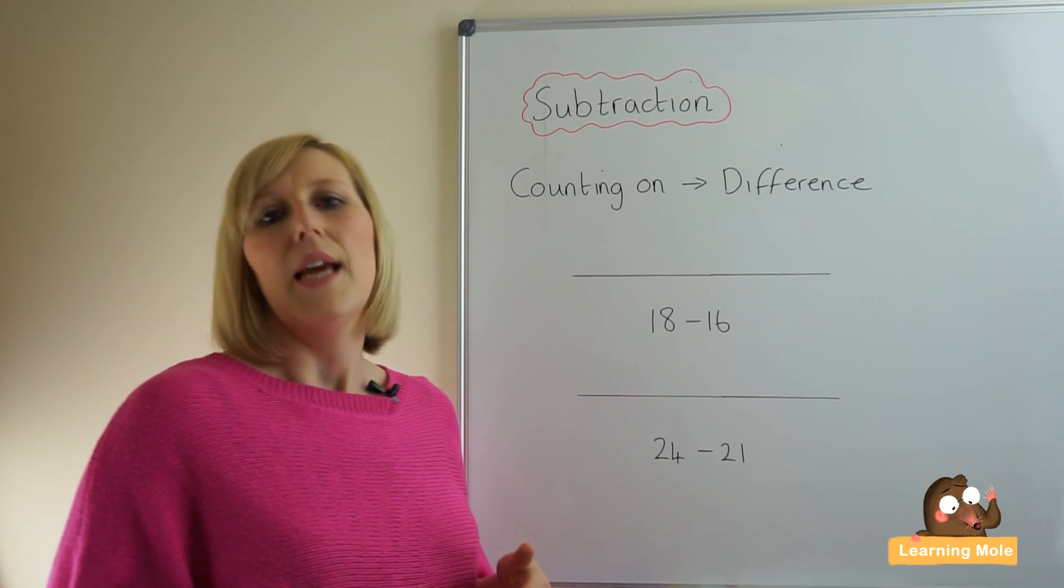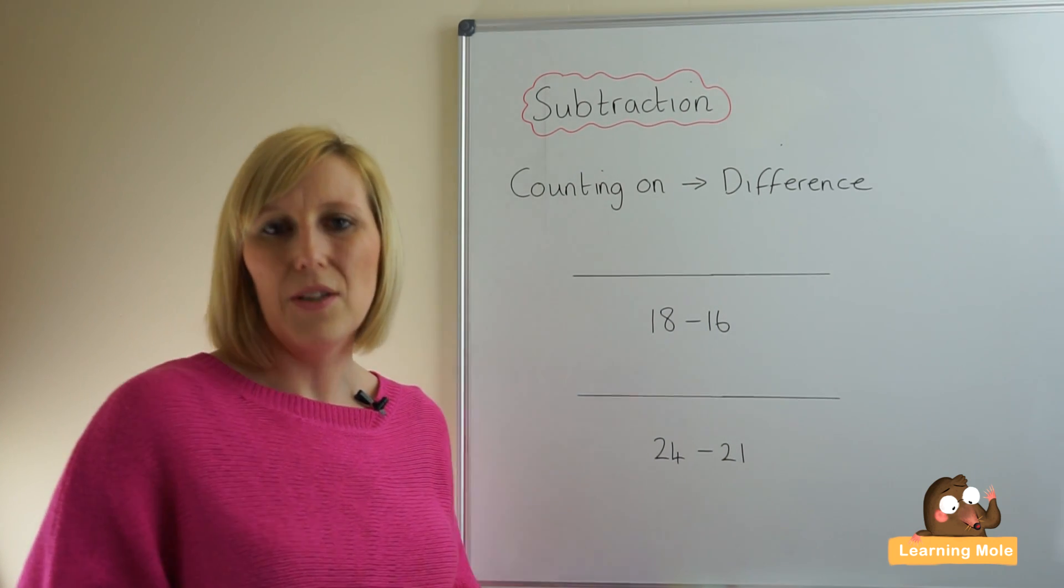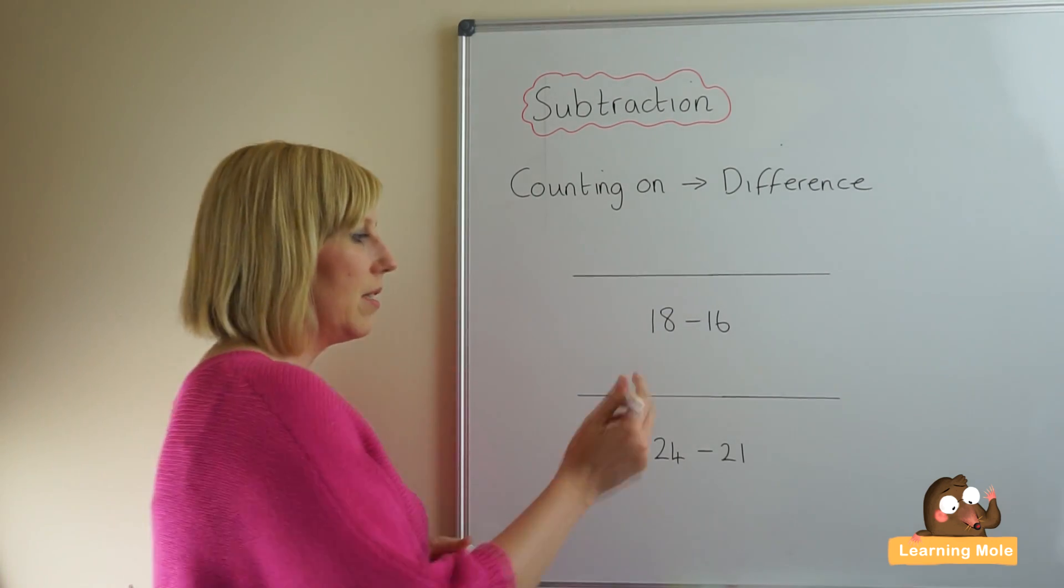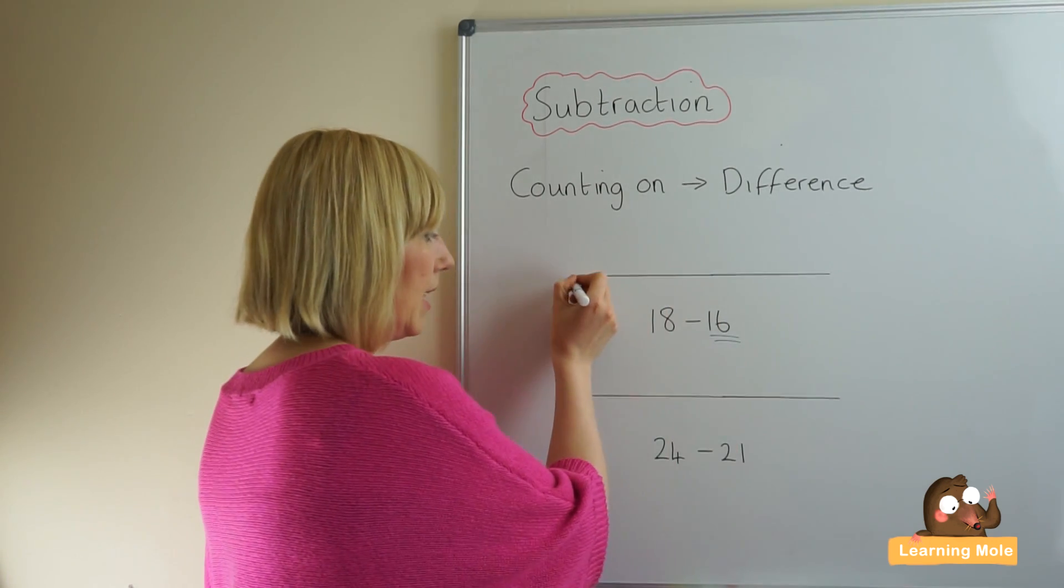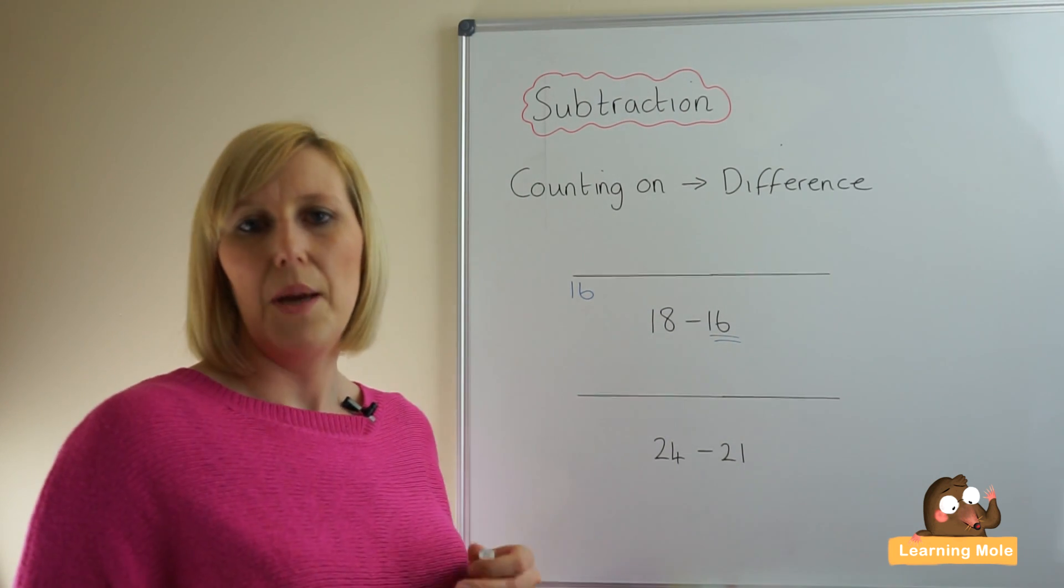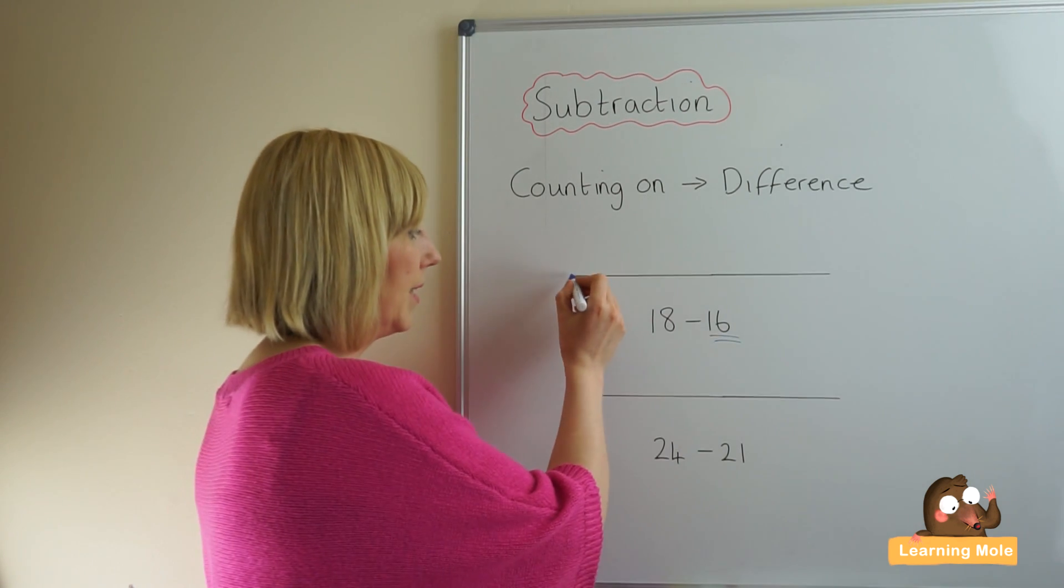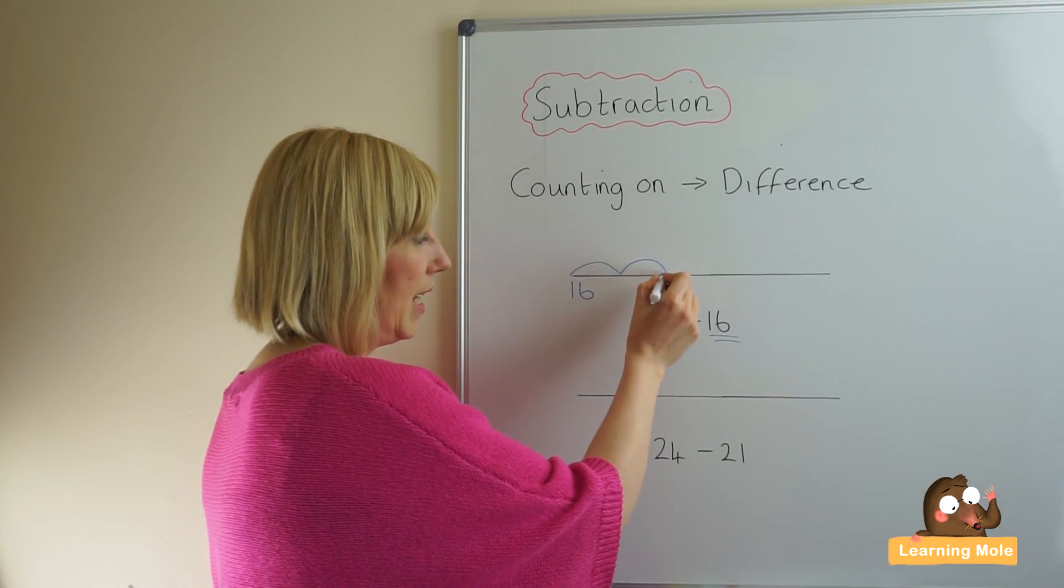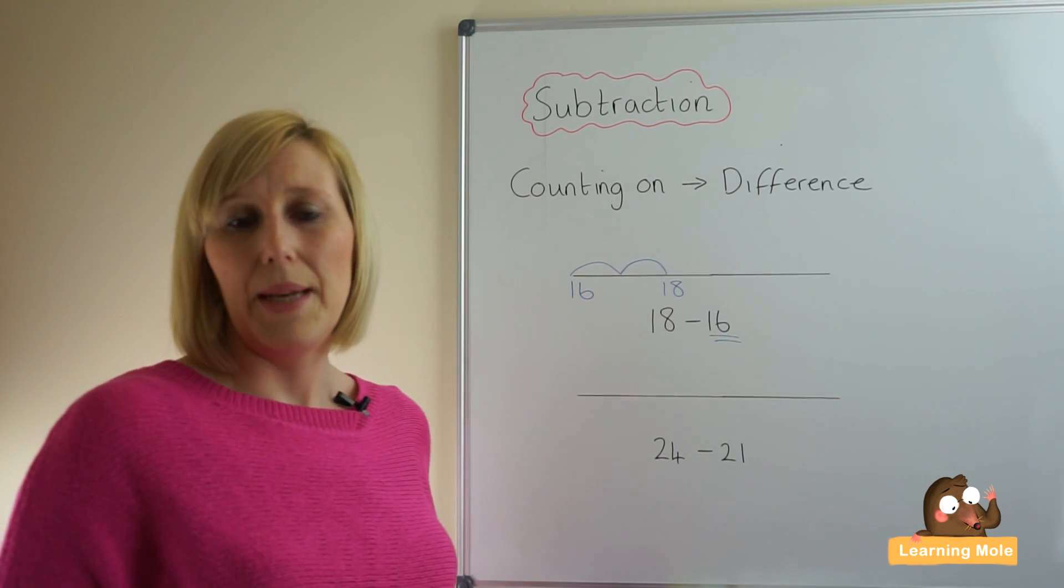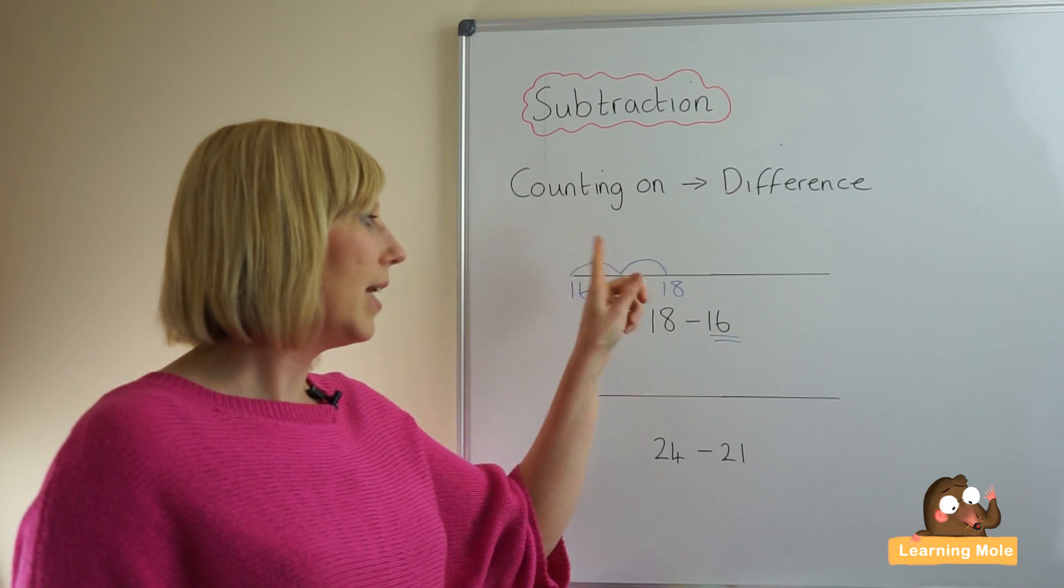When we're talking about counting on and finding the difference, we always take the smallest number because we want to count on to the biggest number. So our smallest number in this case would be 16, and we're going to count on, we're going to find the difference between those two numbers. So 16, 17, 18. We're now going to look at how many steps we've actually made or how many jumps we've actually made, and you can clearly see we've made two.